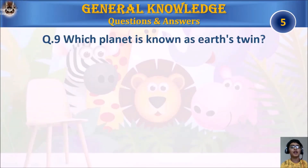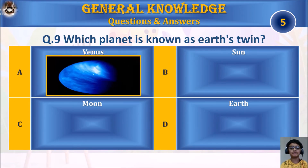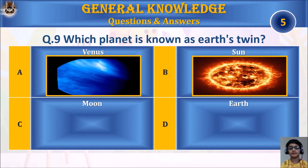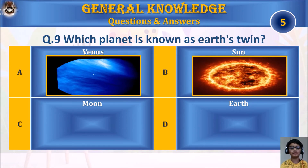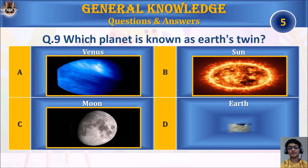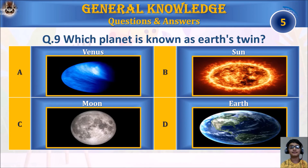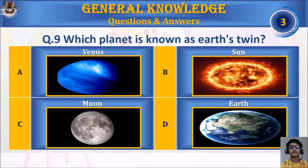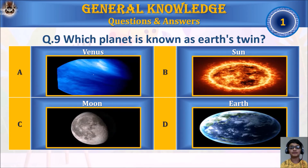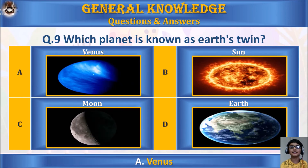Question 9: Which planet is known as Earth's twin? A. Venus, B. Sun, C. Moon, or D. Earth. Your time starts. The answer is A. Venus.